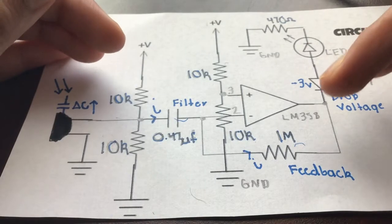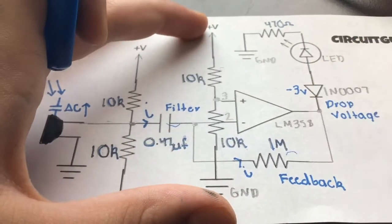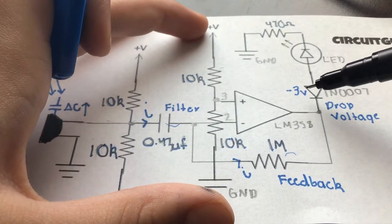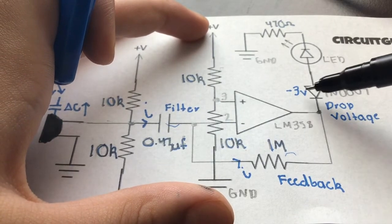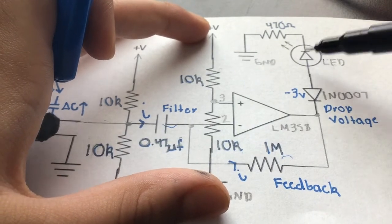Then it goes to the feedback and out in the output. This non-inverting input basically acts as another output. The comparators can have two inputs because it doesn't make sense if you have one input. Then it goes right here and this diode drops the voltage by about 3 volts, and then it goes to this LED to get power.